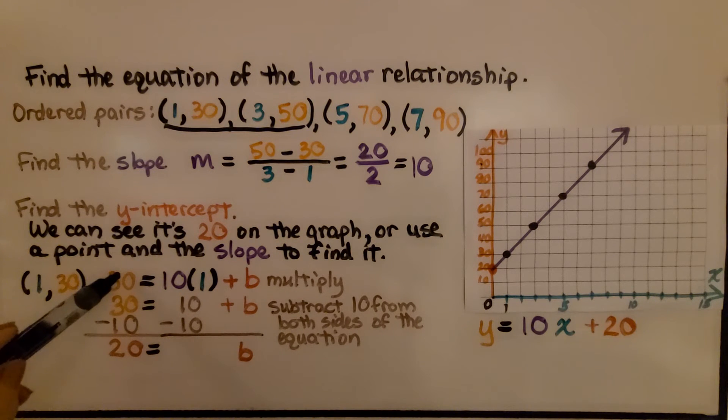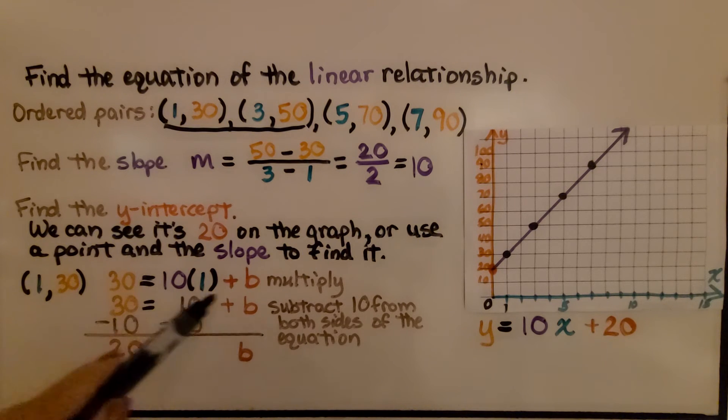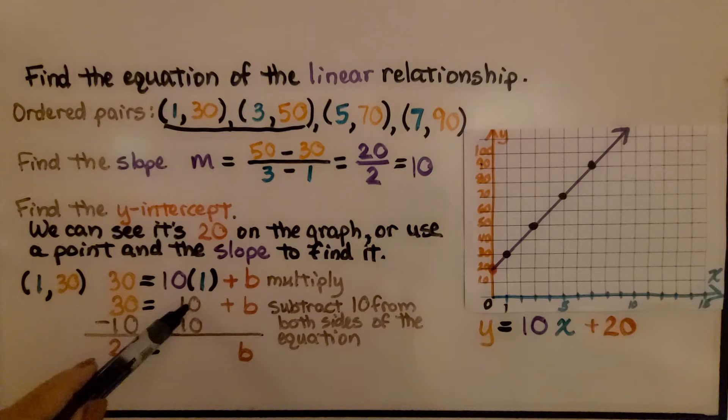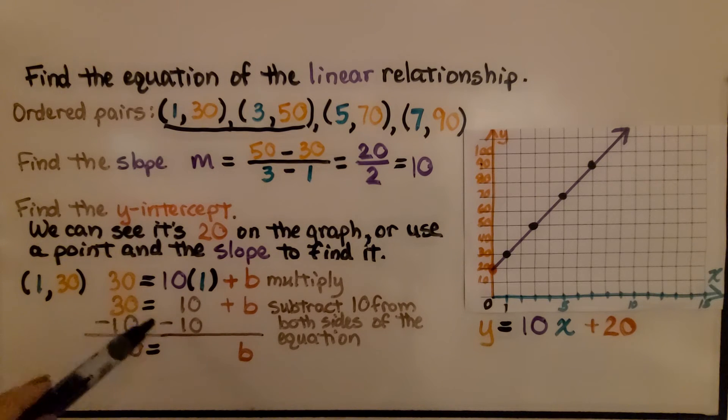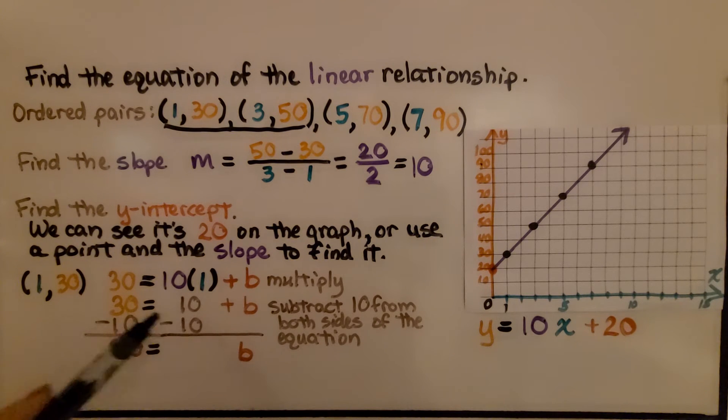And I substitute them into the slope-intercept equation. So y is 30, x is 1, our slope is 10. We multiply and do 10 times 1, which is 10. Now we have 30 equals 10 plus b. We're slowly going to find out the value of b, this y-intercept.